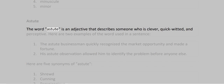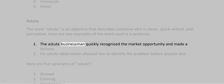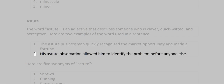Astute. The word astute is an adjective that describes someone who is clever, quick-witted, and perceptive. Examples: 1. The astute businessman quickly recognized the market opportunity and made a fortune. 2. His astute observation allowed him to identify the problem before anyone else.